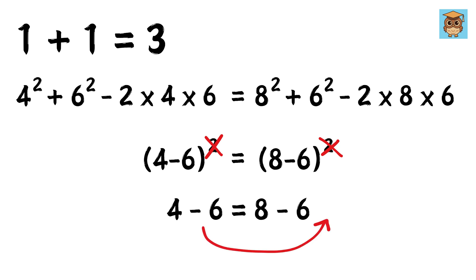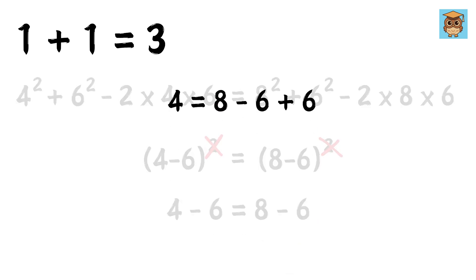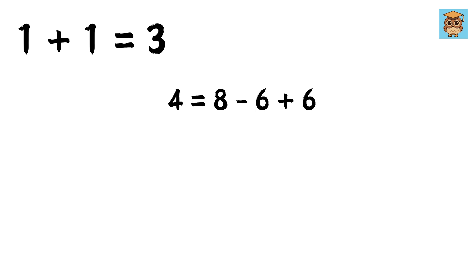Now take this minus 6 on the right-hand side to make it plus 6. We get 4 equals 8 minus 6 plus 6. This 6 will get cancelled out. And we are left with 4 equals 8.